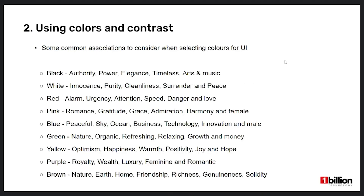Now I will discuss how we can use colors and contrast in a proper way. First, I'll discuss some common associations to consider when choosing a color. Every color has certain universal associations. Black refers to authority and power; white refers to innocence, purity, and cleanliness; red refers to alarm and urgency; pink refers to romance, gratitude, and grace; and blue refers to peaceful sky, ocean, business, and technology. I won't explain all of them, but next we need to consider emotional impact when selecting colors for the UI.